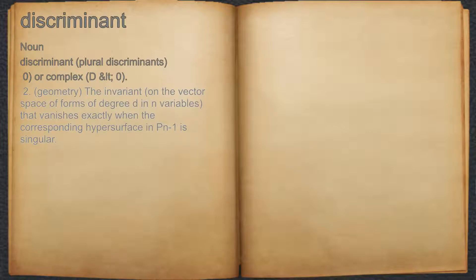2. Geometry: the invariant on the vector space of forms of degree d in n variables that vanishes exactly when the corresponding hypersurface in P^(n-1) is singular.